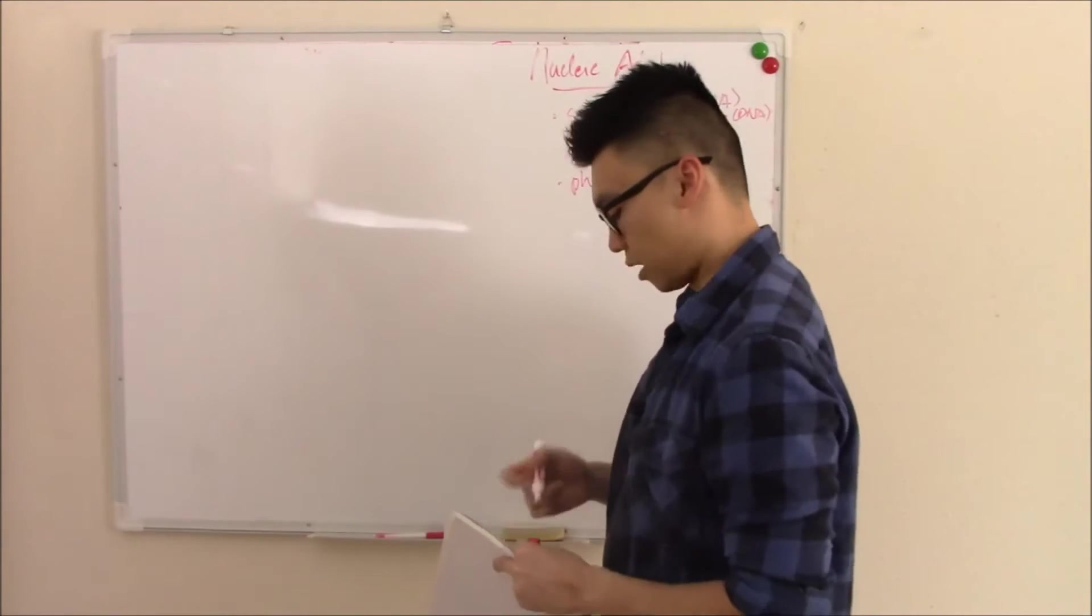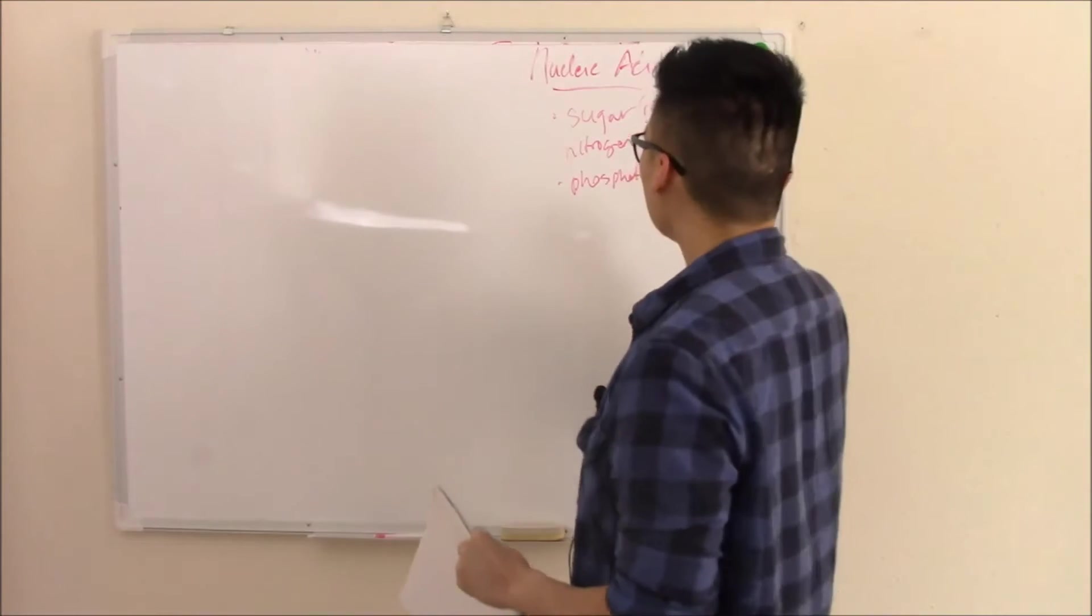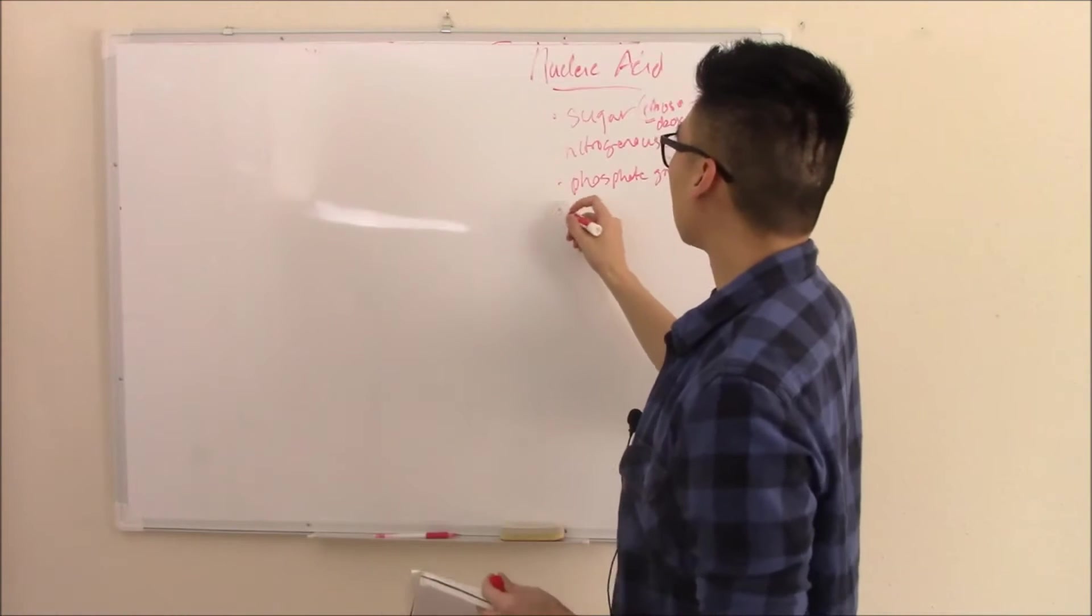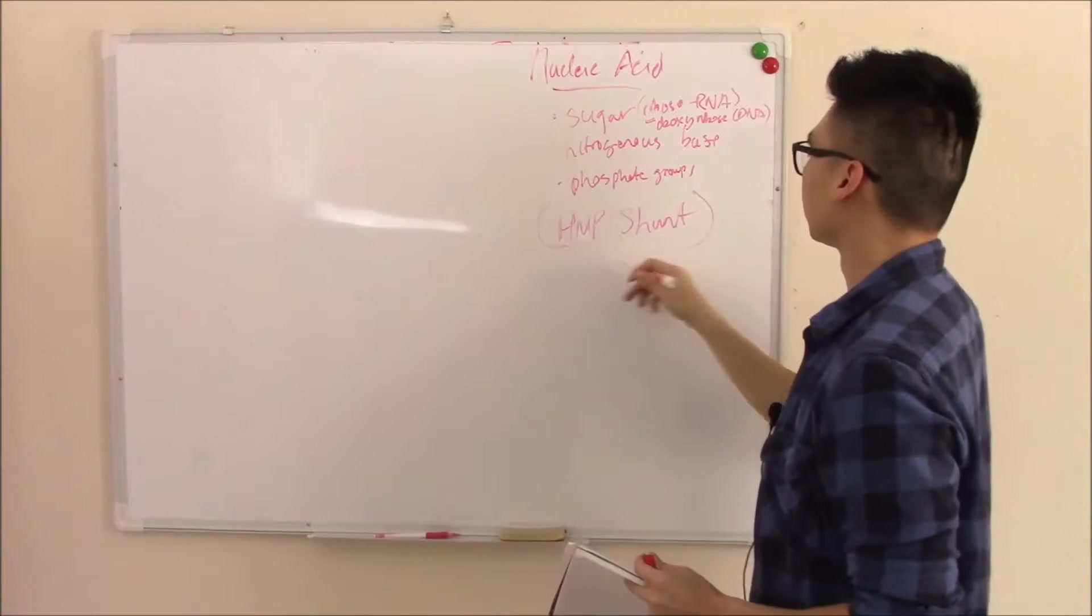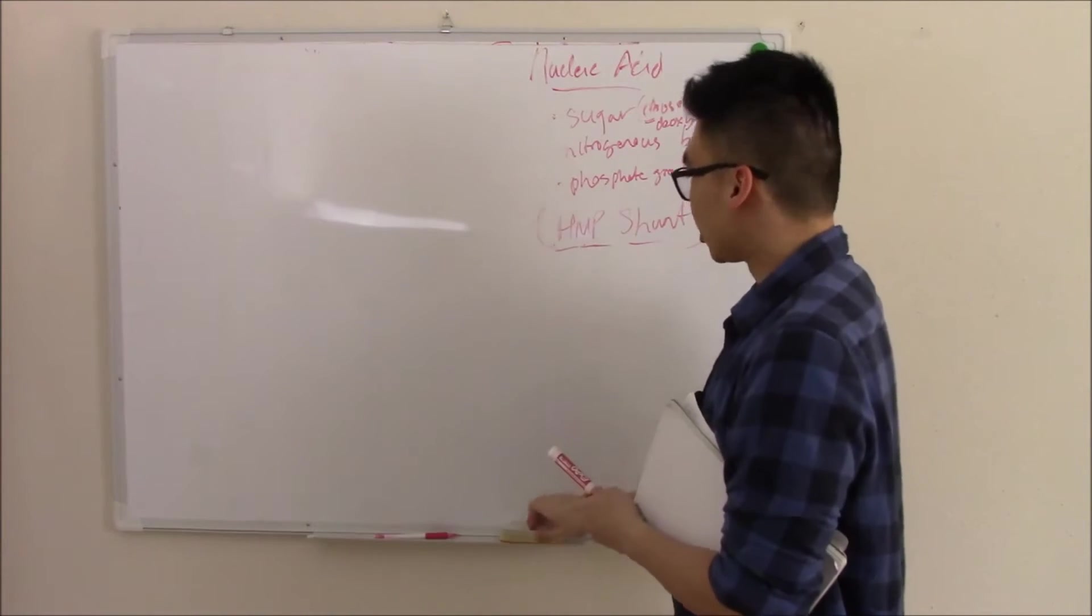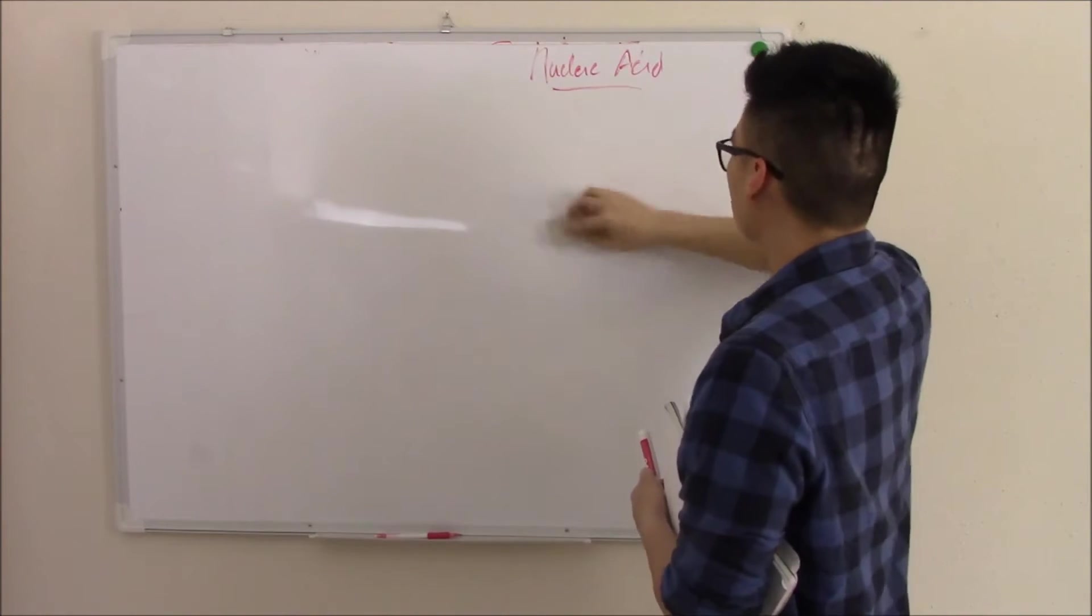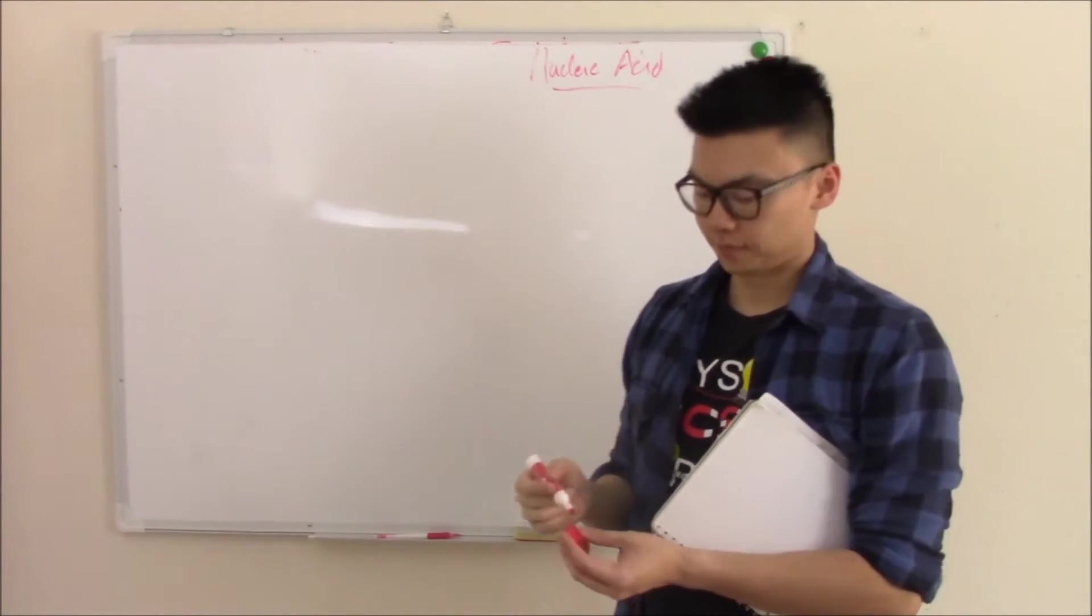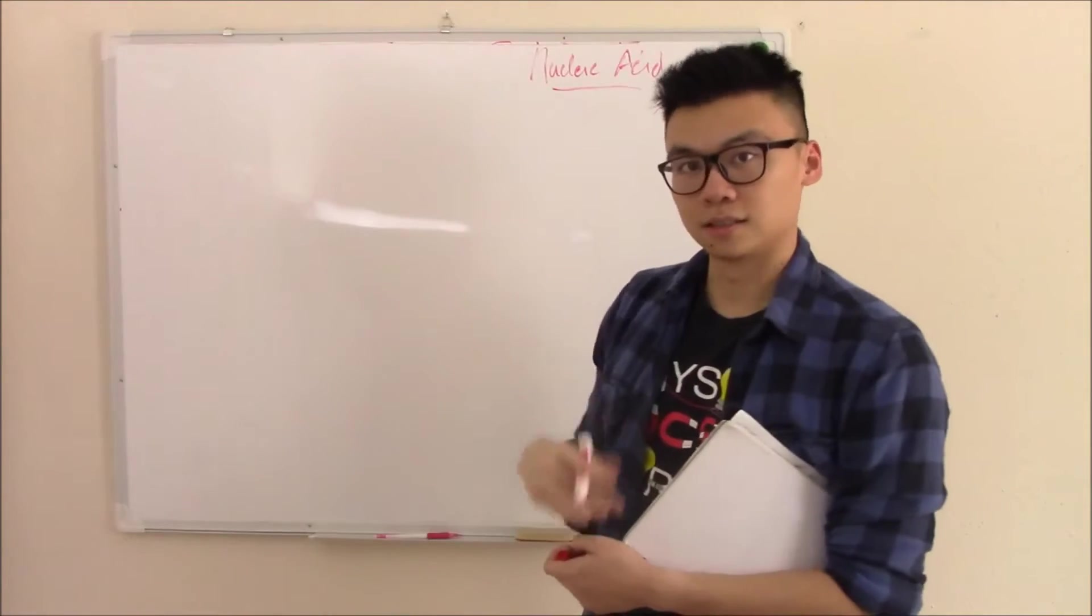I do want to spend some time on the biochemistry of it. I think that's where students can get caught up. In particular, I want to tell you about the synthesis of nucleic acids. And you make nucleic acids through something called the HMP shunt or the hexose monophosphate shunt. We'll start with the most basic, glycolysis.